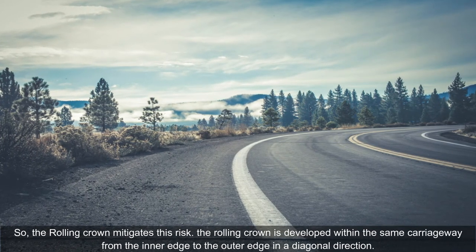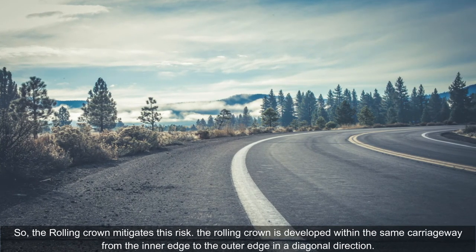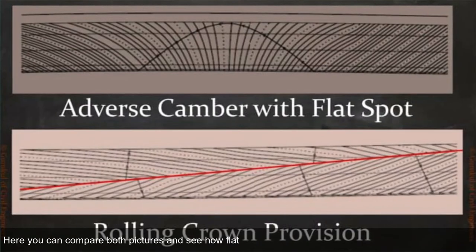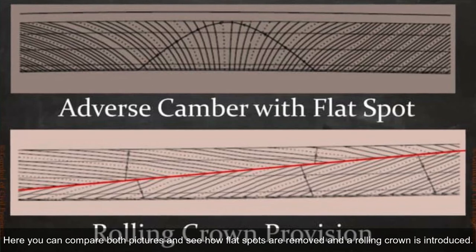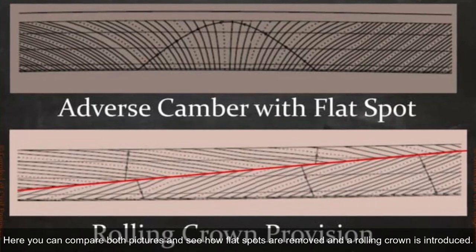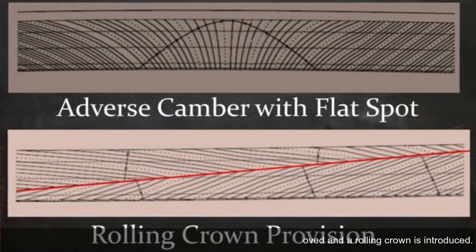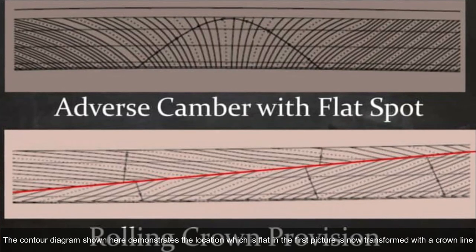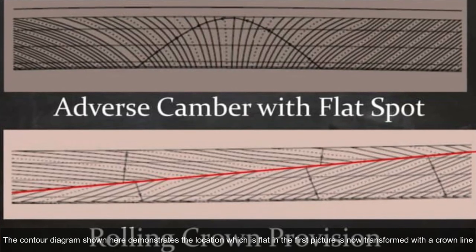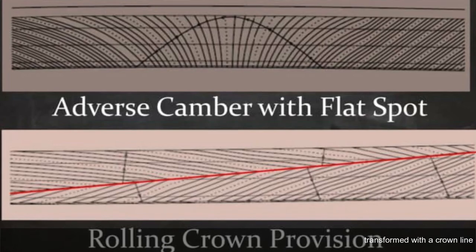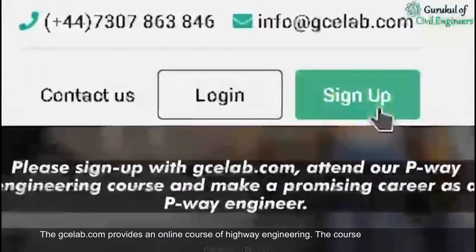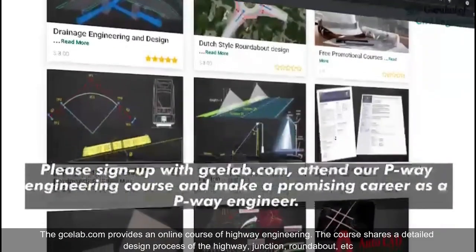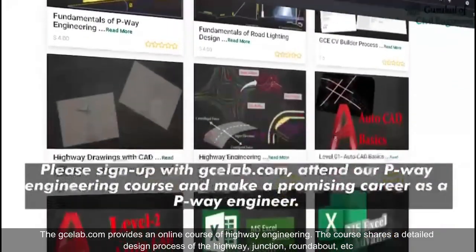The rolling crown mitigates this risk. The rolling crown is developed within the same carriageway from the inner edge to the outer edge in a diagonal direction. Here you can compare both pictures and see how flat spots are removed and a rolling crown is introduced. The contour diagram shown here demonstrates how the location which is flat in the first picture is now transformed with a crown line.